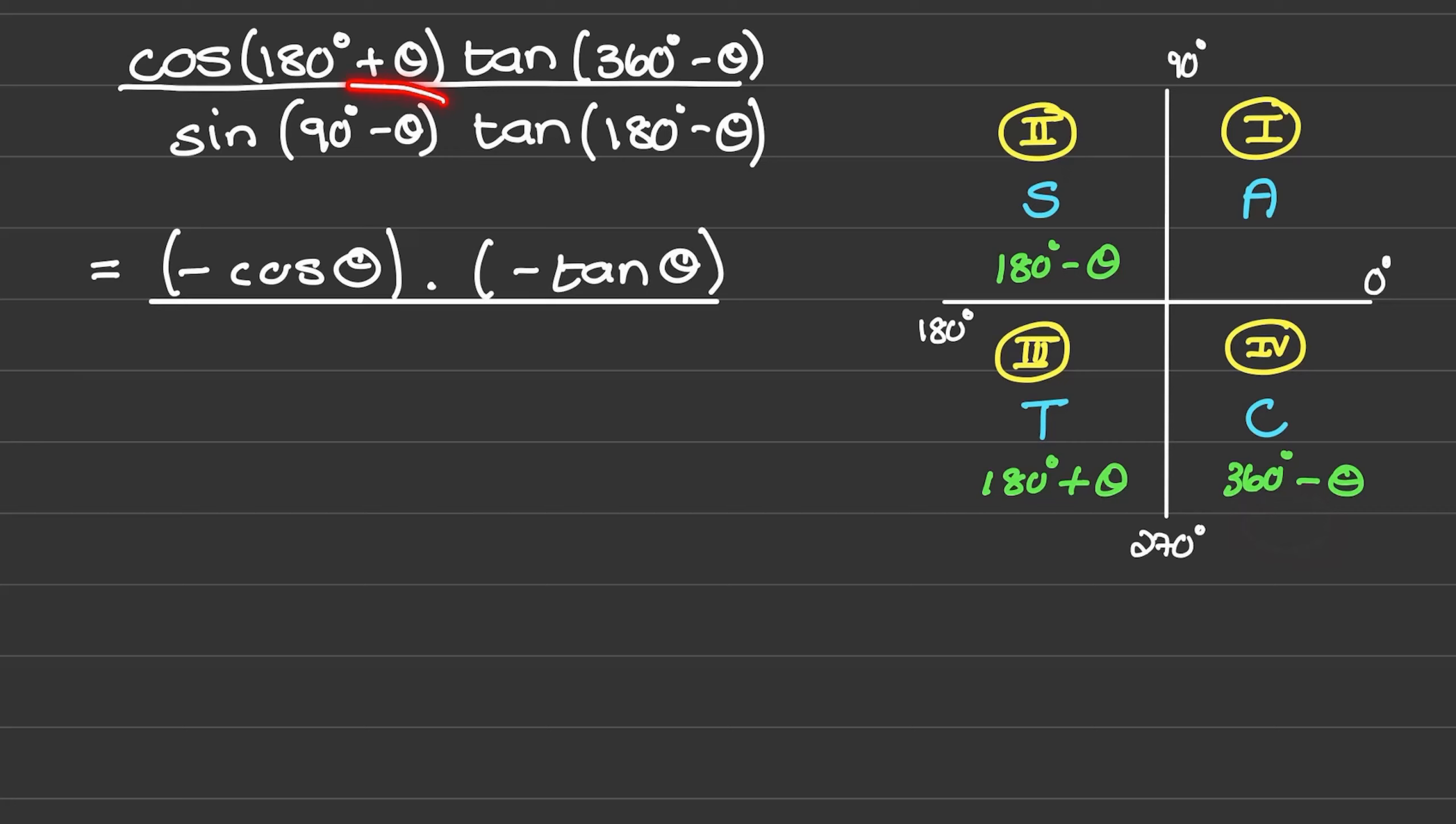In the denominator we have sine of 90 minus theta. That is somewhere in the first quadrant. But we also know that 90 minus theta represents a co-function. So sine would change into cosine.